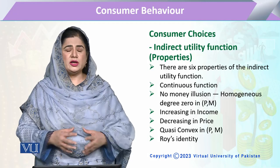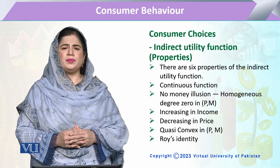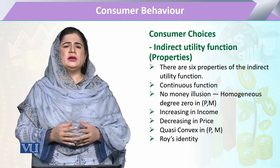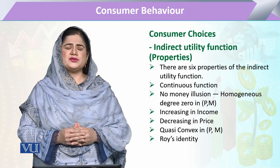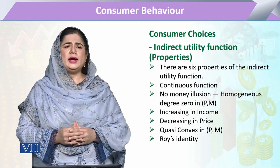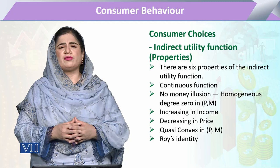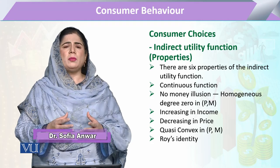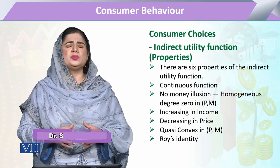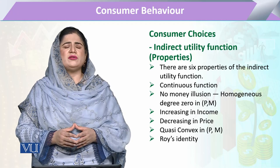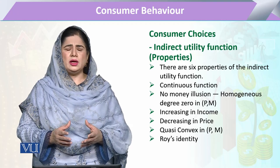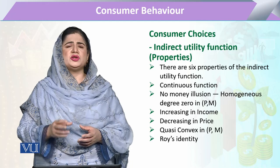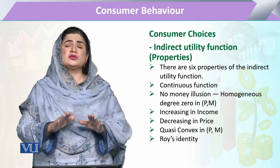We are discussing the properties of the indirect utility function. Generally, we derive certain decisions or conclusions related to any topic, and these conclusions are inferred from various mathematical derivations. For this, we have to assume certain parameters for that function, and therefore there should be certain properties. In the indirect utility function, we draw conclusions about how it will behave and what its impact will be, so it is necessary to have some assumptions or properties which we have to fix.